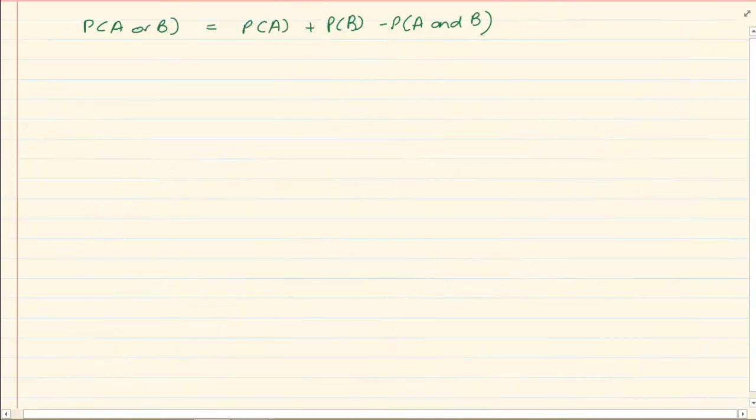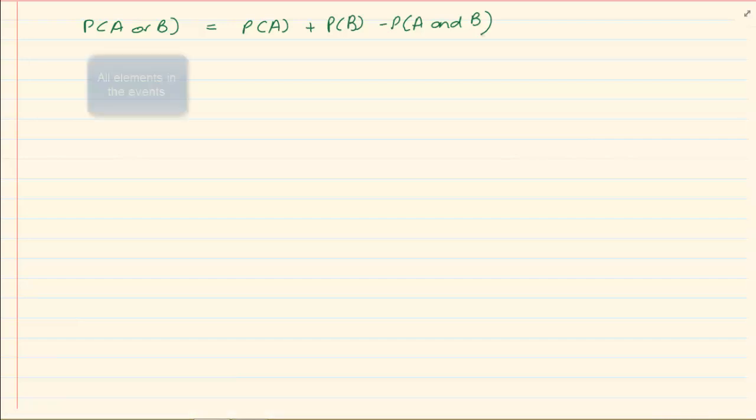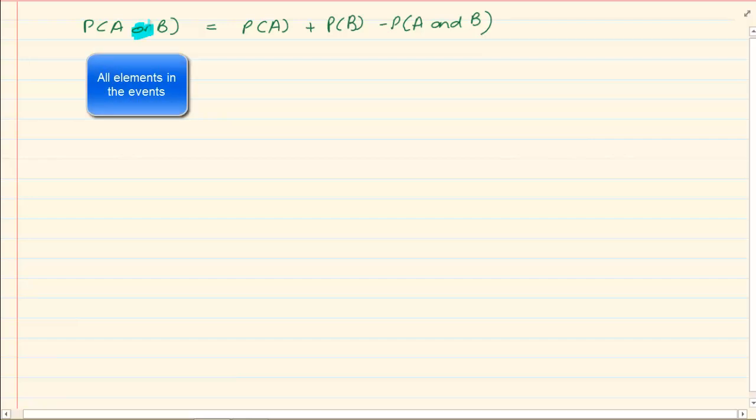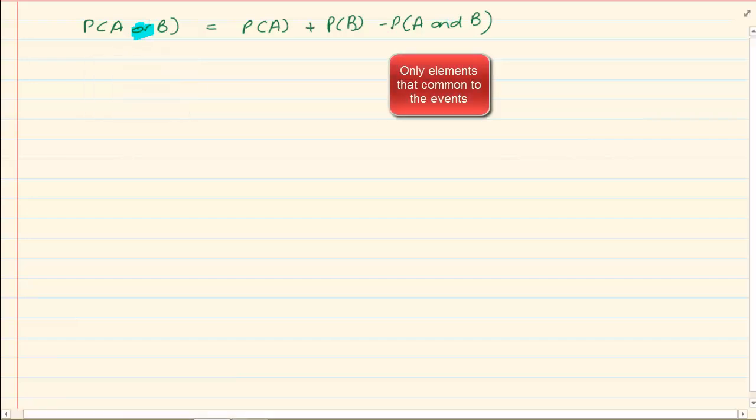Now in inclusive we had used the formula P(A) plus P(B) minus P(A and B) is equal to P(A or B). When we refer to or we are referring to all the elements that are in the event. When we are referring to and we are only referring to the elements that are overlapping.